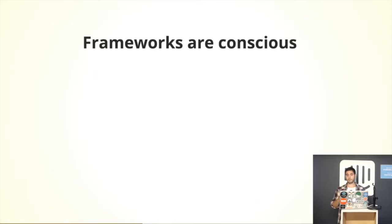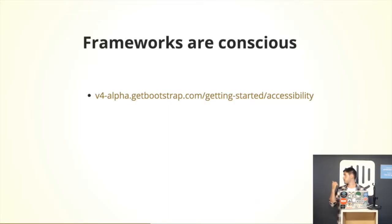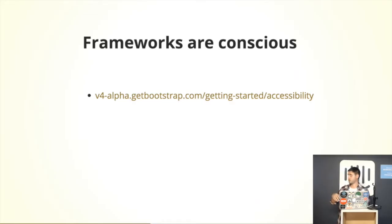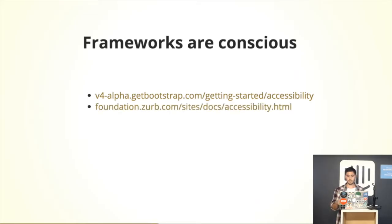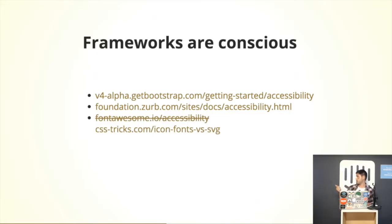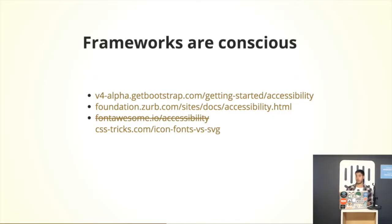Some of this is already taken care of by some of the frameworks that we use. In Bootstrap 4, they have an accessibility page where they tell you how they already have some of it built in — you have to implement the rest. Foundation, the same. Font Awesome has an accessibility page, but they actually say hide the icons, don't use the icons. So use SVG. If you're using SVG instead of font icons, you can have accessibility tags or attributes in the SVG.